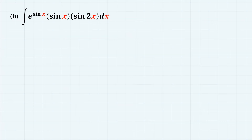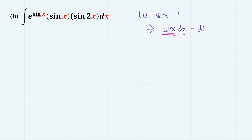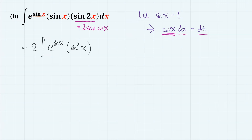And now the second one. If you have solved the previous problem, you would immediately realize that we must substitute sin x in the exponent. So we let sin x equal t, then cos x dx equals dt. But we don't have any cosine x to group with dx to convert to dt. Actually, we do have cosine x — it comes from sin 2x. Using the sine double angle formula, we get 2 times the integral of e to the power of sin x times sin squared x times cos x dx. So now we can convert cos x dx into dt, giving 2 times the integral of e to the power of t times t squared dt.